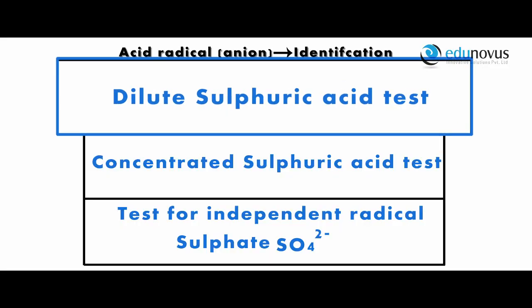Dilute sulfuric acid test: in this test we take a small amount of the salt in a clean and dry test tube and add few ml of diluted sulfuric acid. Let us see the action of diluted sulfuric acid on the salt.